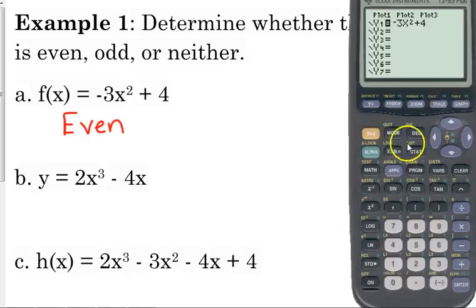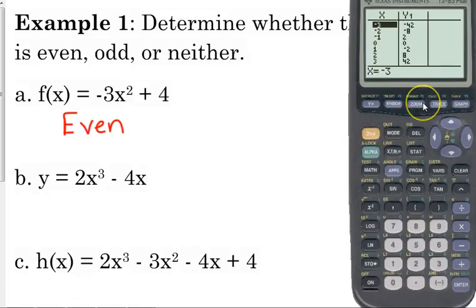Let's check out 2x cubed minus 4x. Let's look at the table first. x equals negative 3, the y value is negative 42. x equals positive 3, the y value is positive 42. So we have the same y values, they just have opposite signs. This is an odd function.